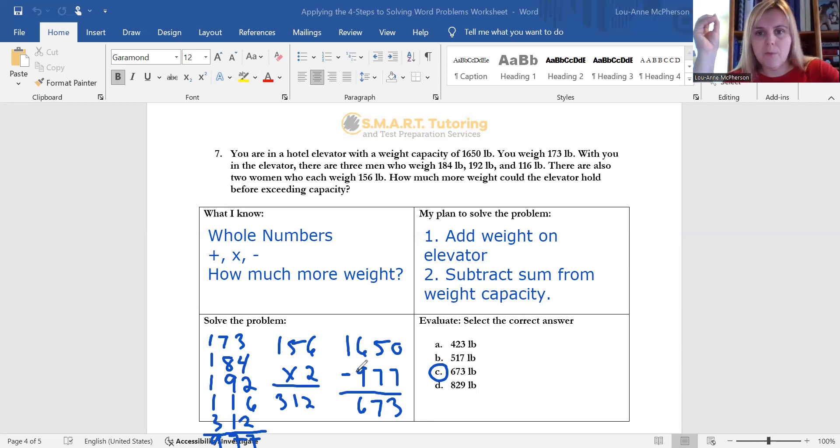To identify the type of math, I suggest just looking at the numbers that you're working with because the type of math is obvious. If it's decimals, you'll see decimals. If it's fractions, you'll see fractions. If it's percent, you could see a percent sign. So look at your numbers. We have whole numbers, okay? So there's nothing special about them. We've just got basic whole numbers: 1,650, 173, 184, 192, 116, and 156. They're all whole numbers.